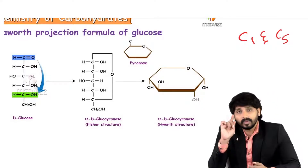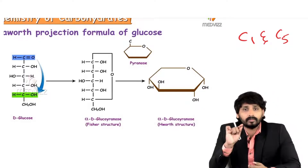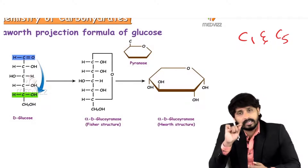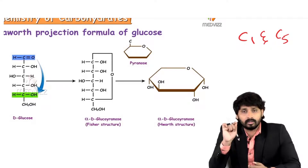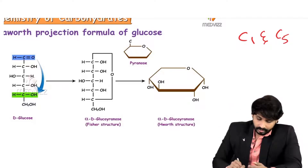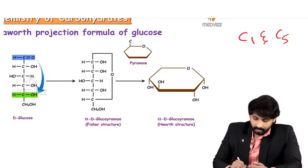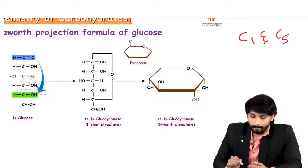Whenever there is an oxide linkage between C1 and C5, that compound — that glucose — is known as glucopyranose. This glucopyranose is then converted to ring form by the Haworth projection formula.